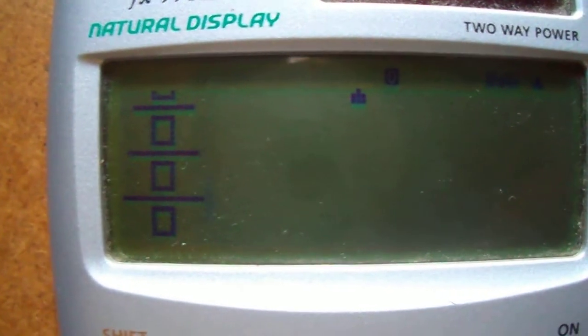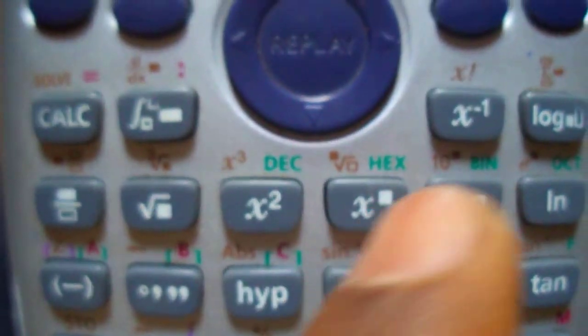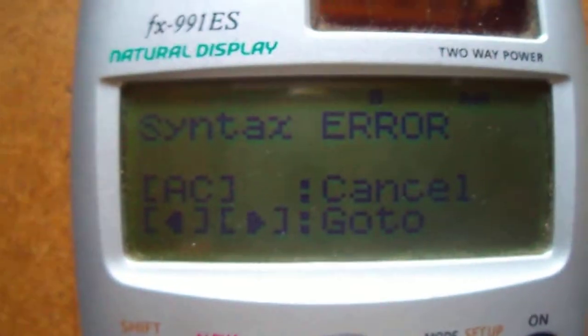Now press 1. Then press the power button. The button here. And then press equal to. You will get a syntax error. But don't worry, that's part of the trick. Then press AC.